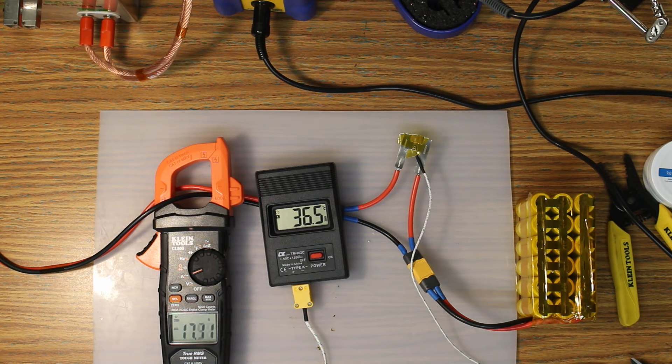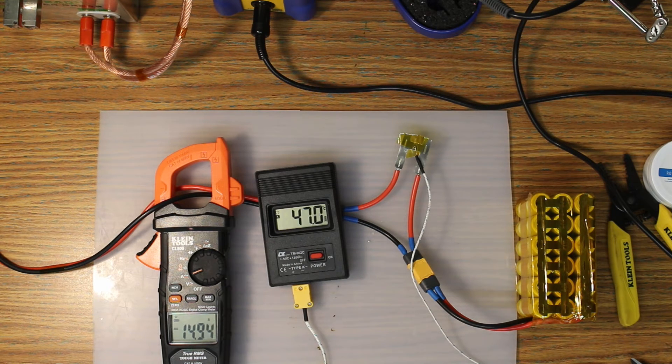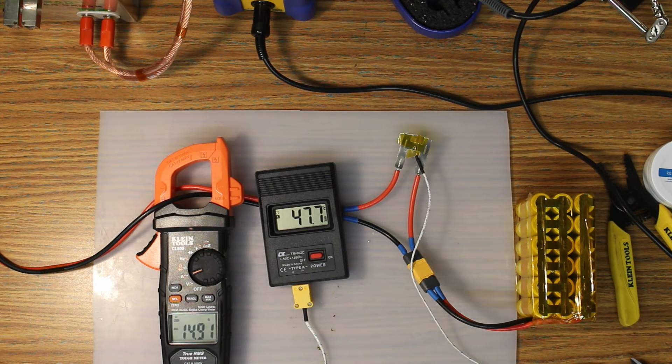Now, we're going to bump the current up to 15 amps and see where the temperature stabilizes out at. Looks like I overshot a little bit. Bring it back down to 15 amps. And at 15 amps, we hit 47.7 degrees Celsius.